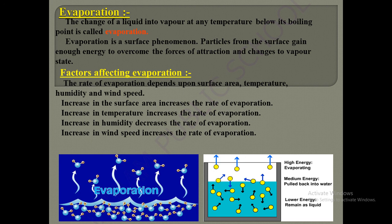The major factors affecting evaporation are: surface area, temperature, humidity, and wind speed. If the surface area increases, the rate of evaporation is very high. For example, water kept in a plate evaporates much faster than water kept in a tumbler, because the plate has a larger surface area.